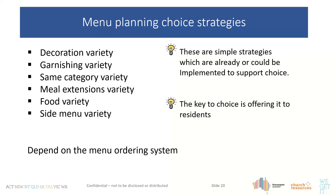I'm developing my own choice strategy menu language: decoration variety, garnishing variety, same category variety, meal extension variety, food variety, and side menu variety — all simple strategies you can implement immediately. But the most important thing every aged care home can do is simply stop and ask residents. Even just asking what kind of biscuit they'd like during morning tea is a great start.